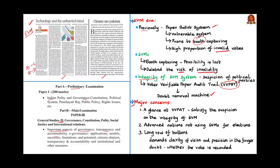The major concerns with the EVM system as pointed out by the author are: firstly, whether a vigilant glance at the VVPAT-provided slip will provide satisfaction to those who have suspicion on the integrity of the EVM; secondly, more advanced nations have not agreed to use EVMs for their elections; and thirdly, the long row of buttons in the EVM creates doubt in voters whether the vote is recorded or cast to the intended candidate. It demands clarity of vision and precision in the fingers, which may not be possible for elderly people. This problem was rectified by VVPAT attached to the EVM, since it provides visual verification of votes cast by the voter.